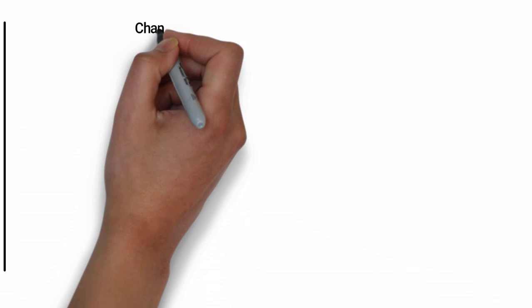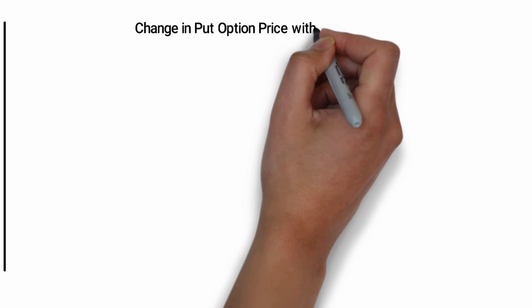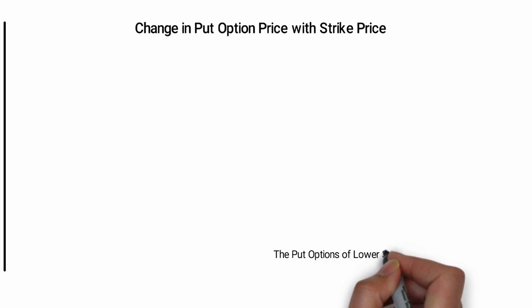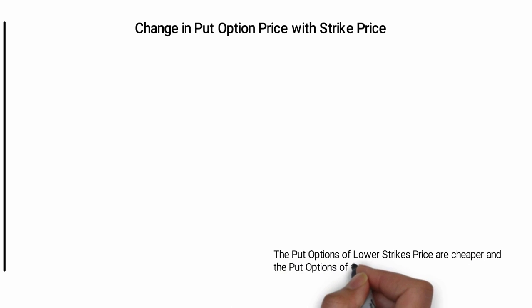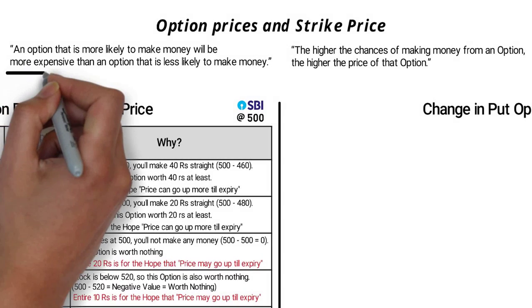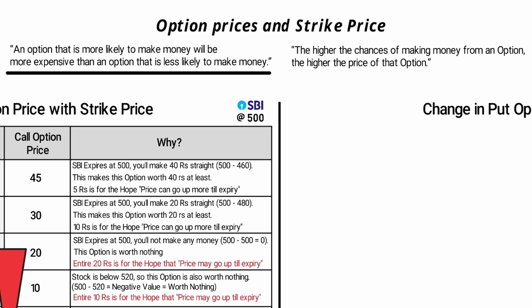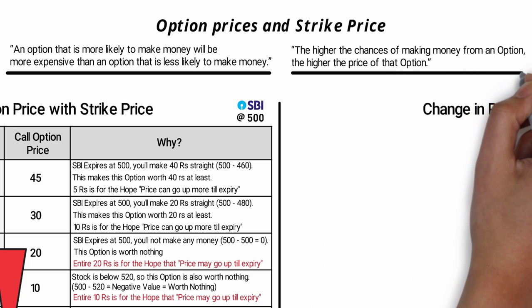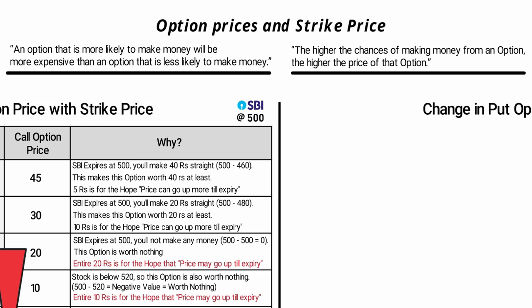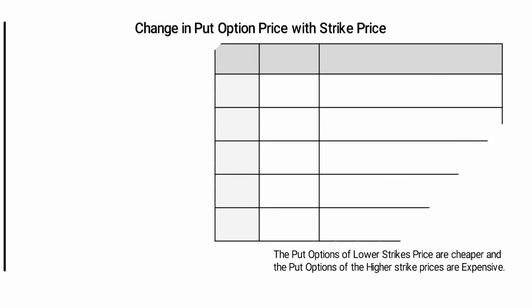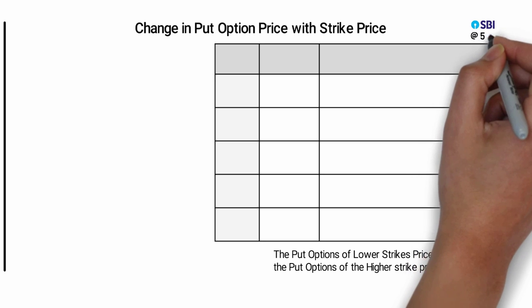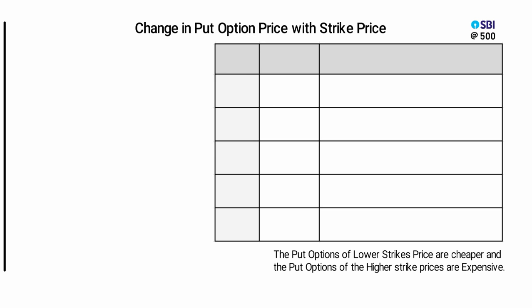Now let's understand how put option prices change with strike price. The put option of a lower strike price is cheaper, and the put options of a higher strike price are expensive. Remember our key fact: an option that is more likely to make money will be more expensive than one that is less likely to make money. The higher the chance of making money, the higher the price. With SBI currently at 500 rupees, let me explain with an example.